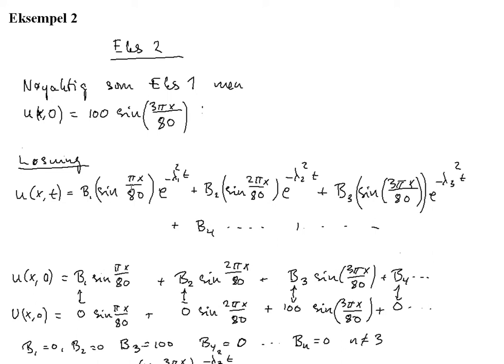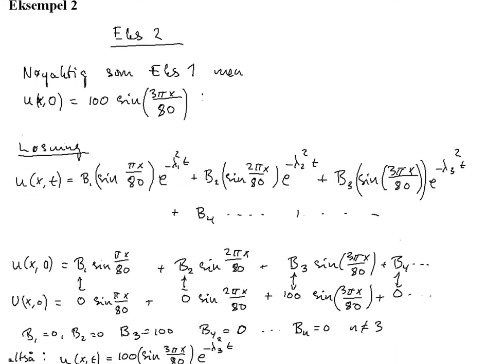b1 sin pi x over 80 multiplied with the exponential function of minus lambda 1 square t plus and so on, b2, b3, b4. In this case b1 is equal to 0.